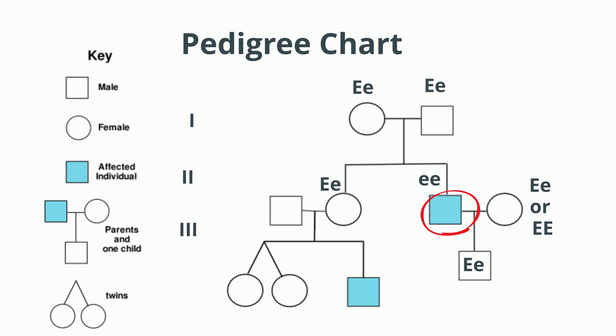I'll fill in the rest of the chart. And let me point out one other thing. The two circles in Generation 3, those are twins.